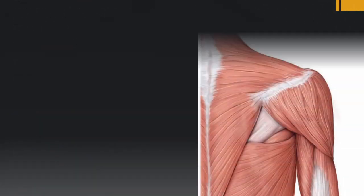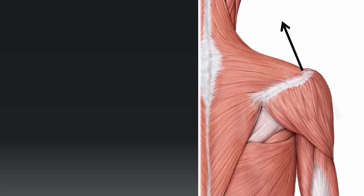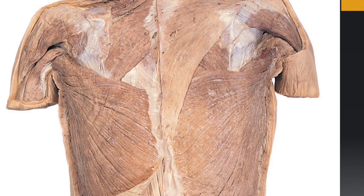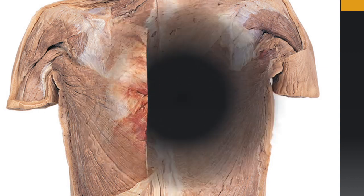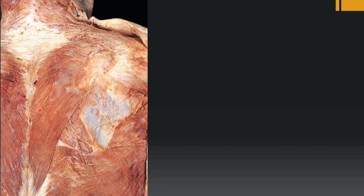Here you can identify the middle fibers of trapezius in this dissected image, showing how the upper, middle, and lower fibers run and exactly where each attaches. The upper fibers go to the clavicle, the middle fibers go to the spine of the scapula and medial margin of the acromion process, and the lower fibers reach the deltoid tubercle of the scapula. Here you can also see the lower fibers clearly.